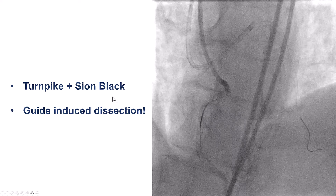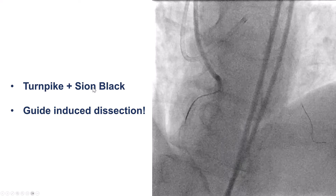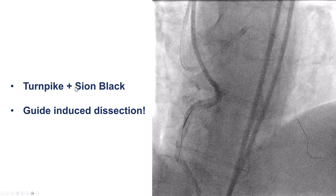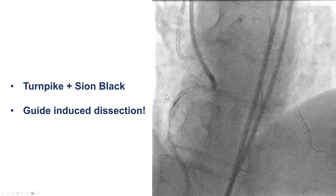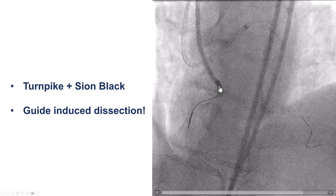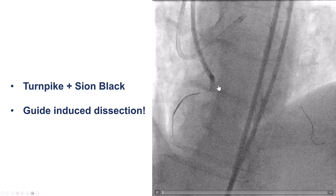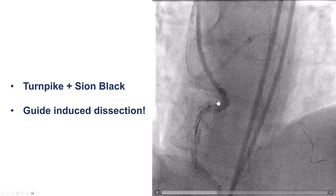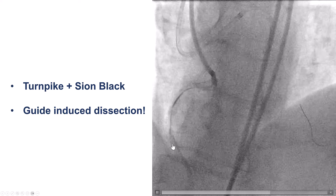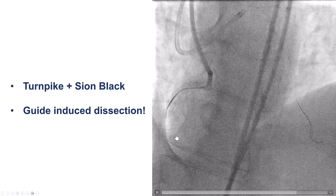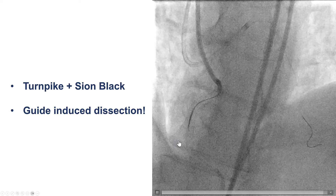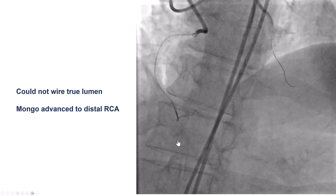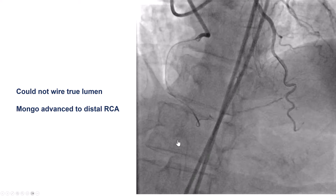We tried to advance a guide wire, but it was difficult. We did use a C-on-black wire as well as a Turnpike, but the problem was there was likely some dampening of the pressure, and when we gave a little puff, you can see there's a big dissection happening into the right coronary artery.